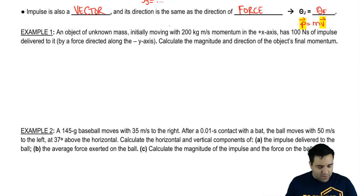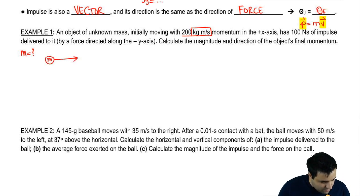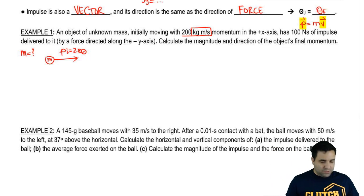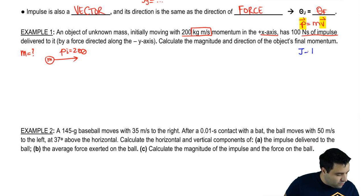Let's do an example. An object of unknown mass, initially moving with 200 kilograms meters per second momentum. If I didn't say momentum, you would have known by the units. Here's this object moving this way with a momentum P initial of 200. In the positive x-axis, it has 100 newton seconds of impulse delivered to it by a force directed along the negative y-axis.